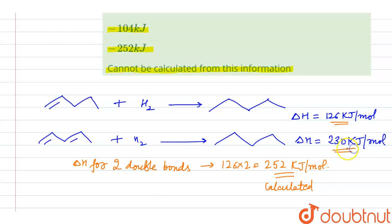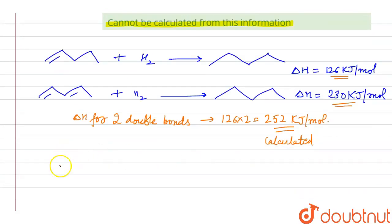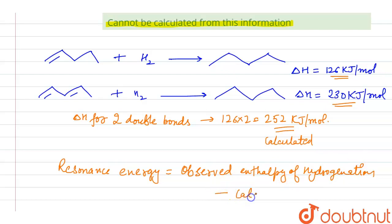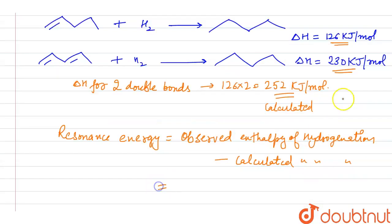The observed or the experimental value is 230 kJ. And we know that resonance energy is equal to observed enthalpy of hydrogenation minus calculated enthalpy of hydrogenation. So observed is 230 kJ and calculated is 252 kJ per mole. So this comes out to be minus 22 kJ per mole.